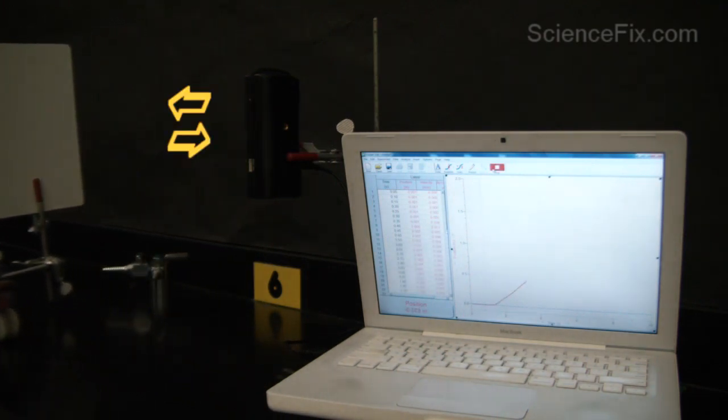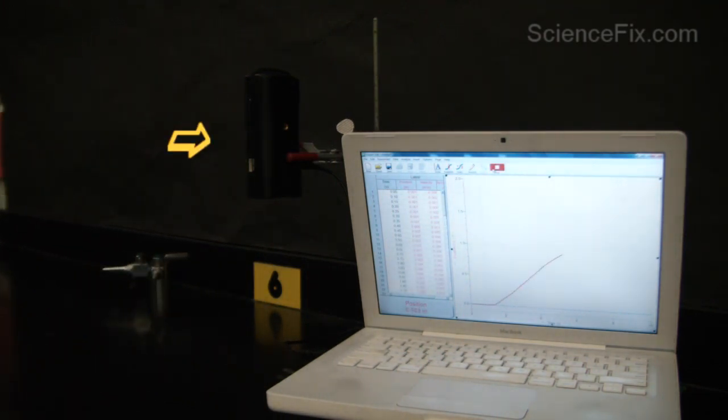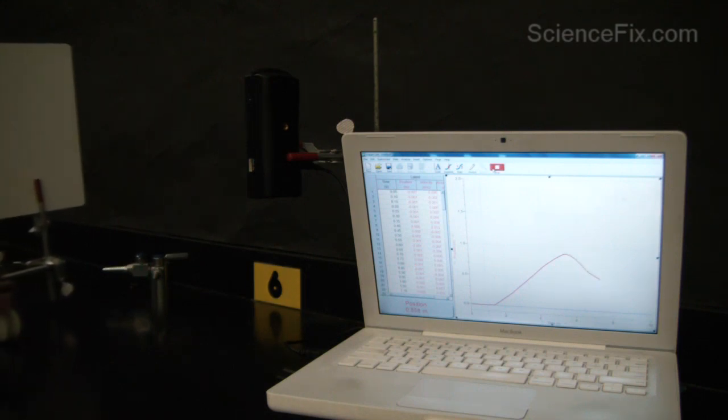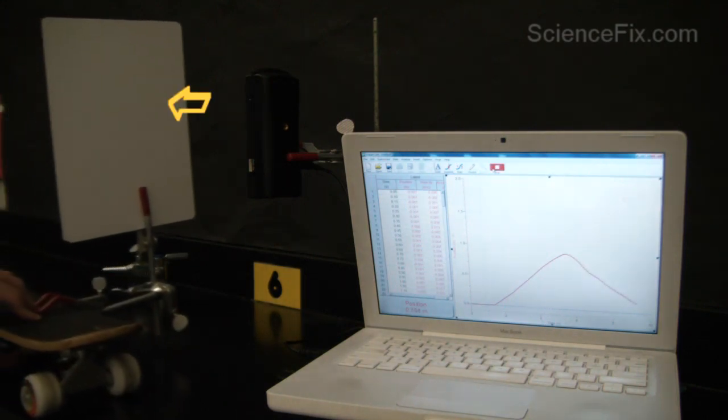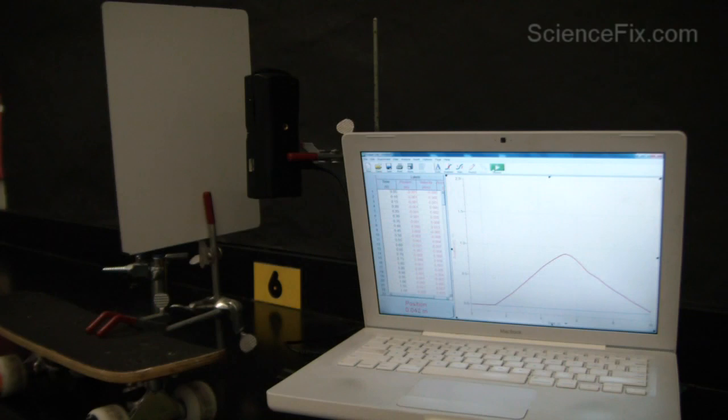The sensor is activated and the skateboard is being moved away, further from the sensor and then closer toward the sensor. You can see the data being recorded on the graph right there.